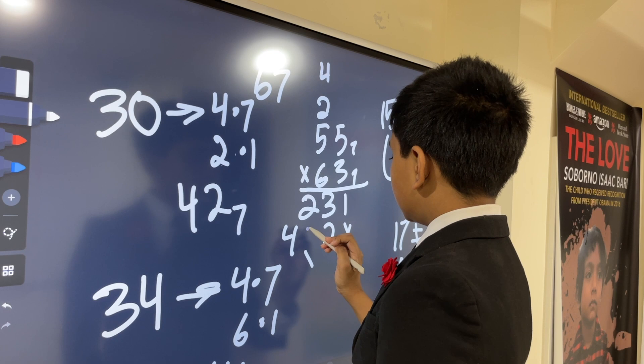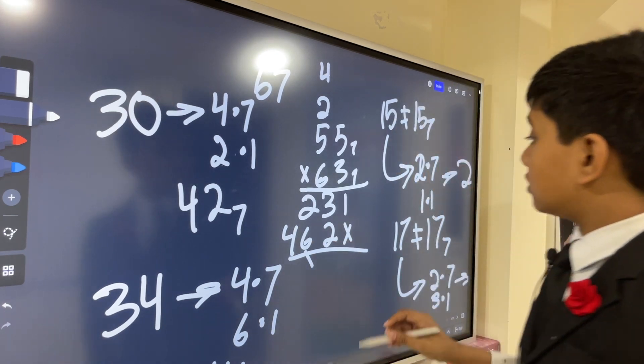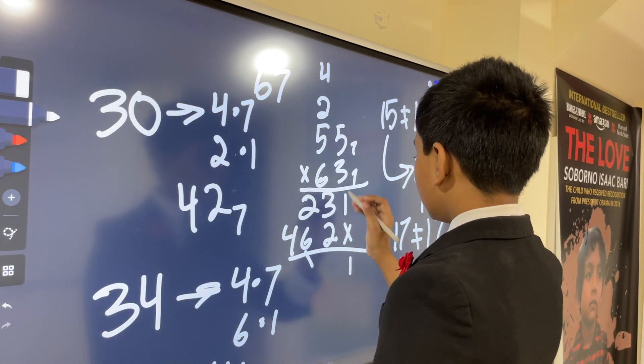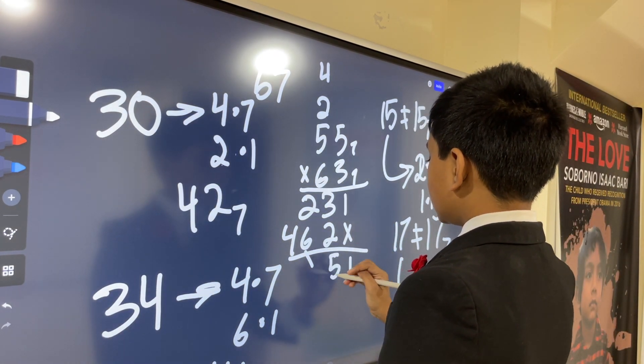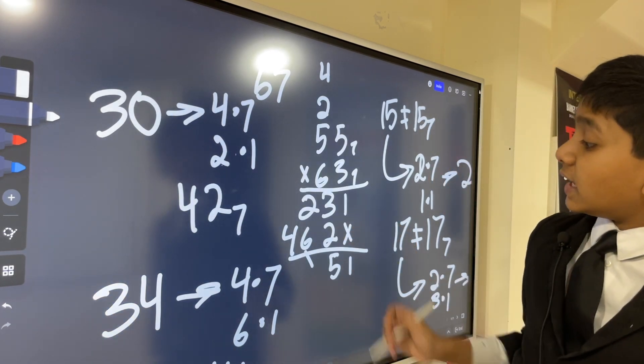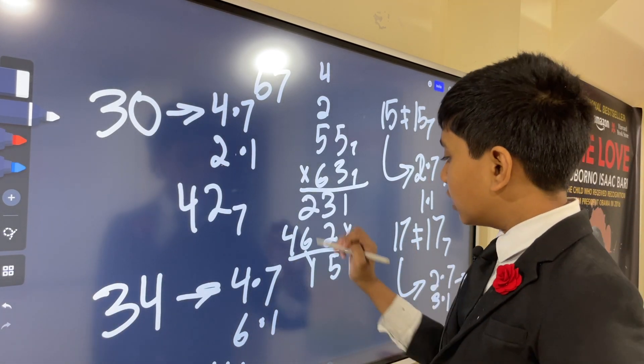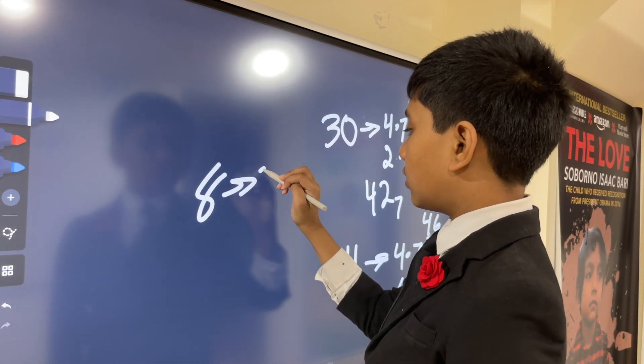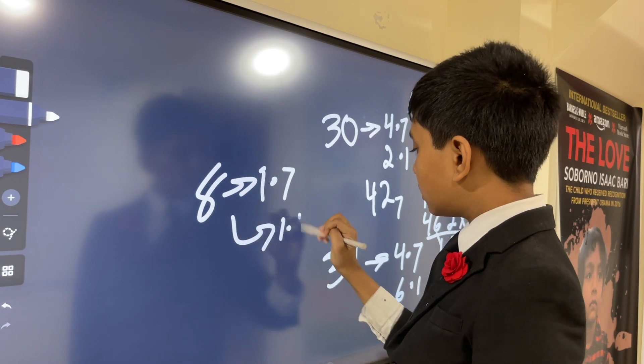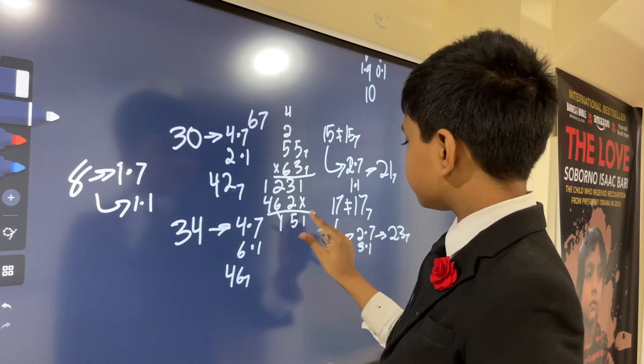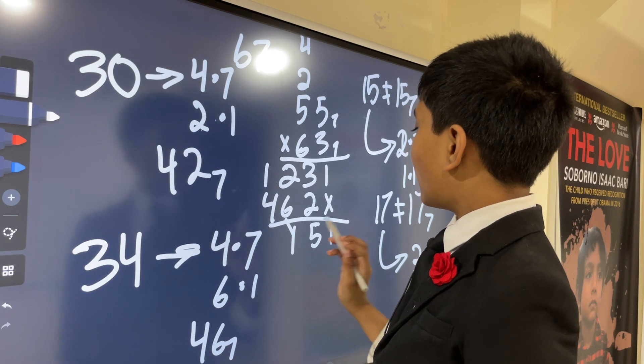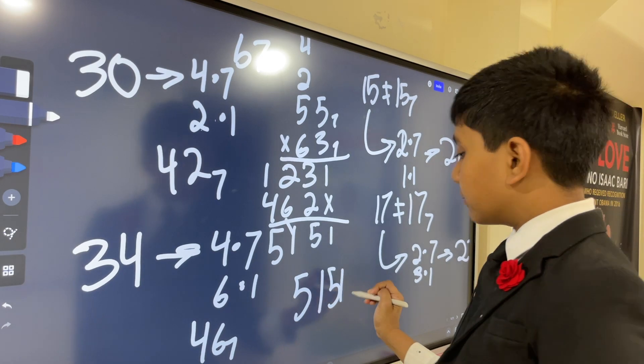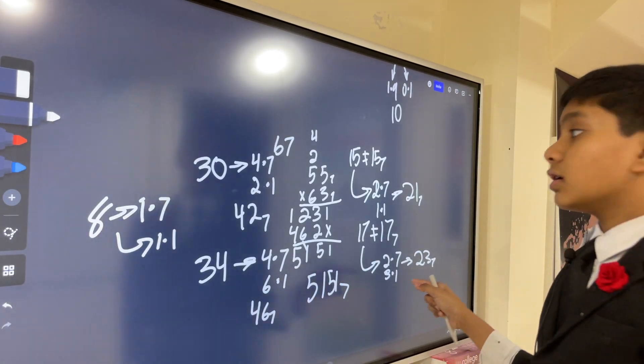Adding these together, we can't use 8 in base 7, so this is gonna be 11, which is 1 seven and 1 one. Then 1 plus 4 is 5. So it's 5151 base 7.